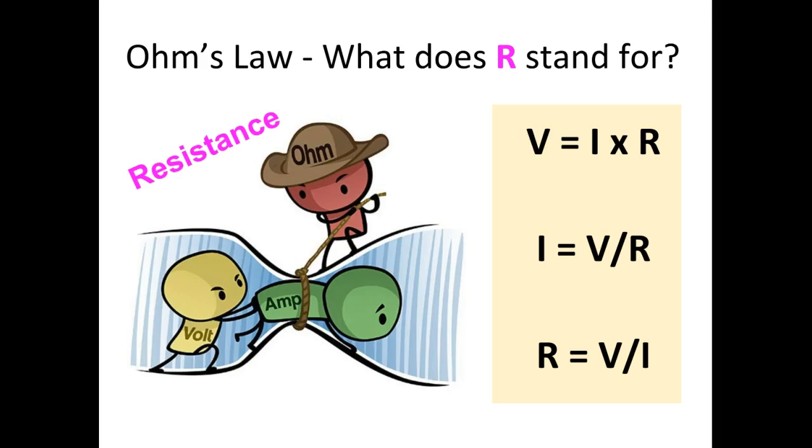This diagram shows how the three quantities relate to each other. Voltage is the push that pushes current through the system. Voltage is shown by Mr. Volt. Current is shown by Mrs. Amp. The unit for current is amp.